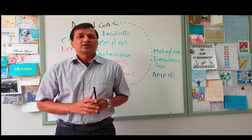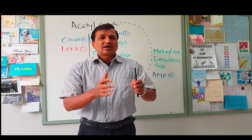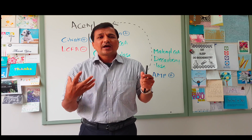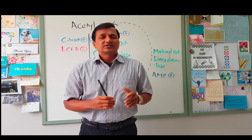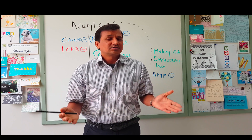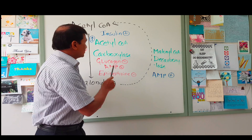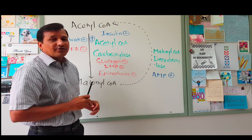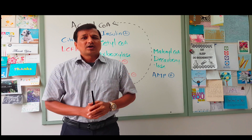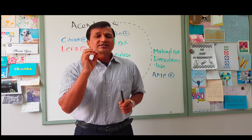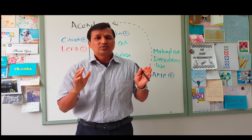Acetyl-CoA carboxylase is in dimer form when inactive. Citrate brings these dimers together and makes a polymerized, active form of the enzyme. The end product of fatty acid synthesis is a long-chain fatty acyl molecule, most often palmitate. Accumulation of long-chain fatty acids in the cytoplasm has a negative effect on acetyl-CoA carboxylase. So citrate is a positive modulator and long-chain fatty acids are negative modulators.